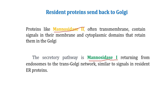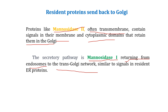Proteins like mannosidase II, which are often transmembrane proteins, contain signals in their membrane and cytoplasmic domains that retain them in the Golgi — similar to chaperones and disulfide isomerase having specific amino acid signals. Some Golgi proteins also have signals for retrieval from later compartments in the secretory pathway, such as mannosidase I, which is retrieved from endosomes back to the trans-Golgi network.